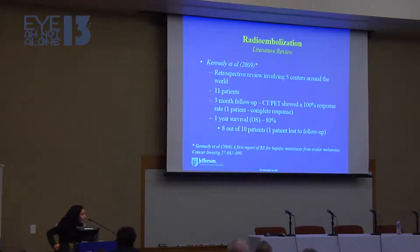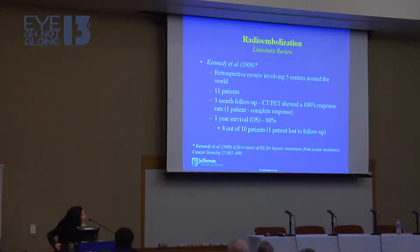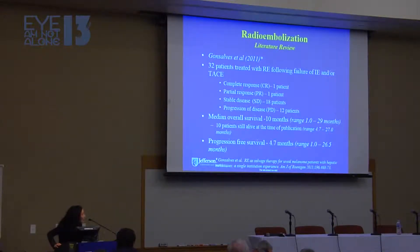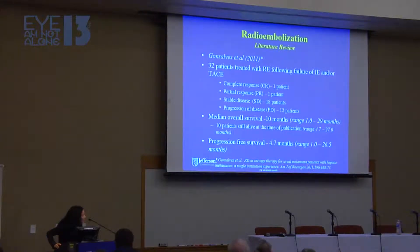There's really not a lot in the literature on radioembolization for uveal melanoma. The first study was published in 2009 — five centers around the world, 11 patients — a very rare tumor, but with encouraging results: 100% response rate at three-month follow-up and a one-year survival of 80%. We published our own experience with 32 patients, treated following failure of other treatments like immunoembolization or chemoembolization. We found 20 patients had stable disease or a response; 12 had progression, with a median overall survival of 10 months and 10 patients still alive at follow-up.